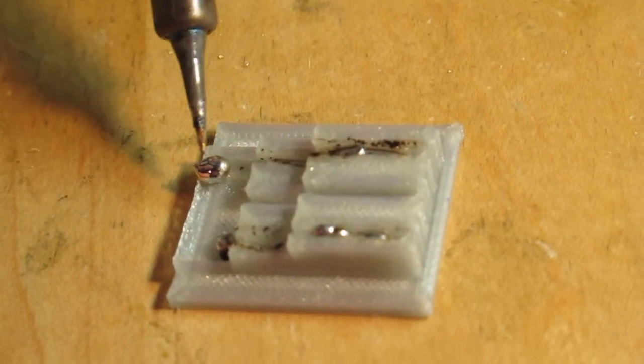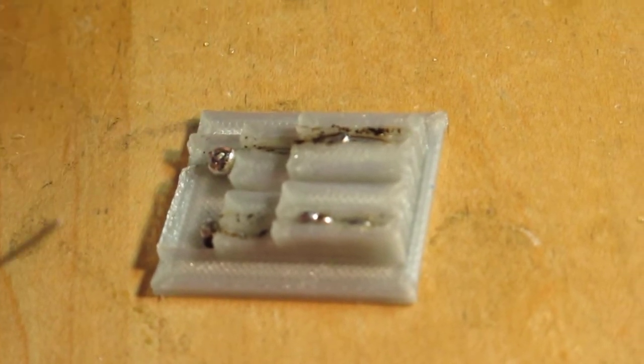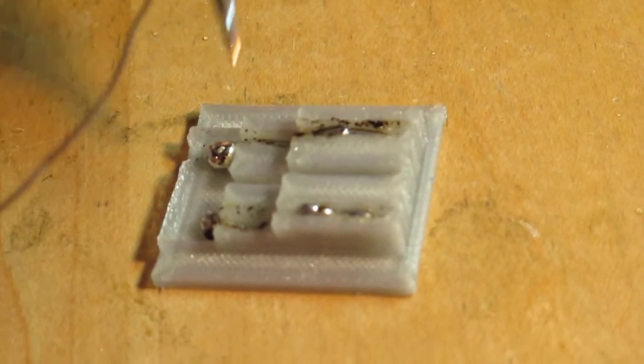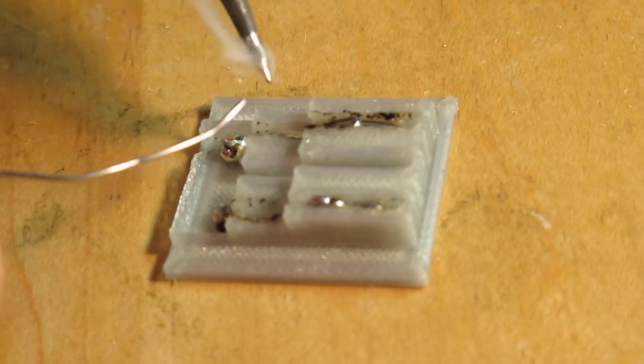So as you can see, you can even work the solder on the surface of the PLA without it being too deformed by the heat that the solder contains. Makes it a pretty usable combination.